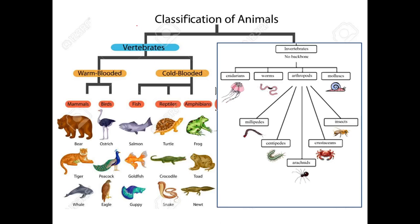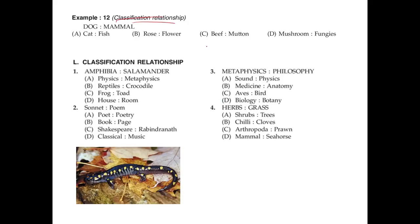Classification mostly happens in animals or subjects. For example, dog is a mammal. Let's review the classifications of animals — these are very important to revise. We have mammals, which are furry animals; birds; fishes; reptiles, which have scaly skins; and amphibians, which go both on land and in water. Invertebrates are those without a backbone, while vertebrates have a skeleton.